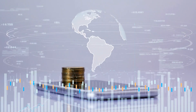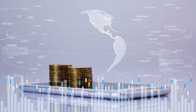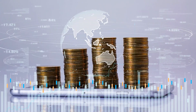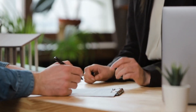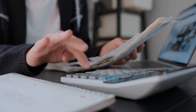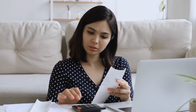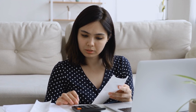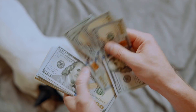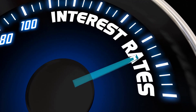In summary, the choice between secured and unsecured loans depends on your financial situation, the purpose of the loan, and your risk tolerance. Secured loans can offer lower interest rates and higher loan amounts, but come with the risk of losing the collateral if you can't repay. Unsecured loans are based on your creditworthiness and offer flexibility, but may come with higher interest rates.